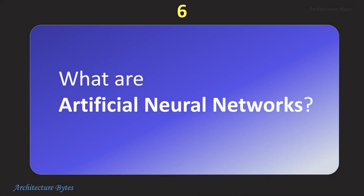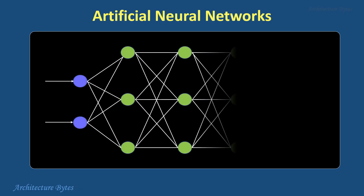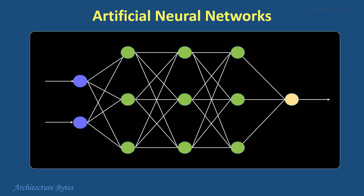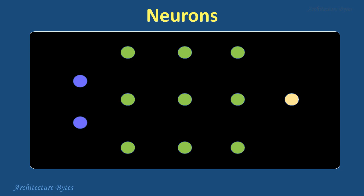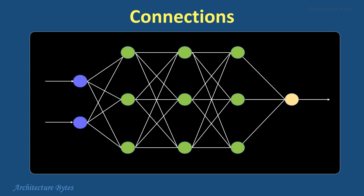What are artificial neural networks? Artificial neural networks are computer programs or systems inspired by the way our brain works. They learn and make decisions from data, much like how humans learn from experience. They are made up of neurons and connections between them. Neurons are the basic building blocks of a neural network — mathematical functions that process input data and produce an output, connected to other neurons through connections.